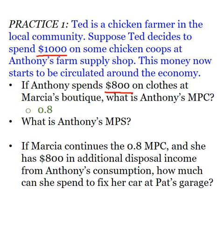If his MPC is 0.8, what is his MPS? It's 0.2. You can do that two ways: MPC and MPS always add up to 1, so knowing MPC is 0.8, subtract from 1 to get 0.2. Or the longer route: if he spent $800, then he saved $200, and 200 divided by 1,000 gives us 0.2.